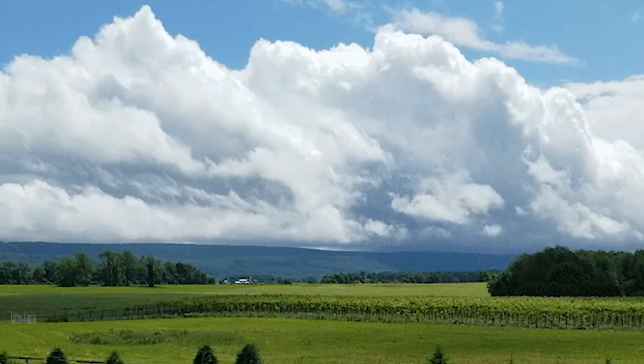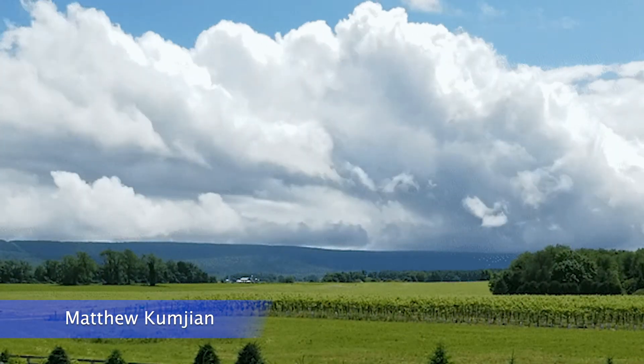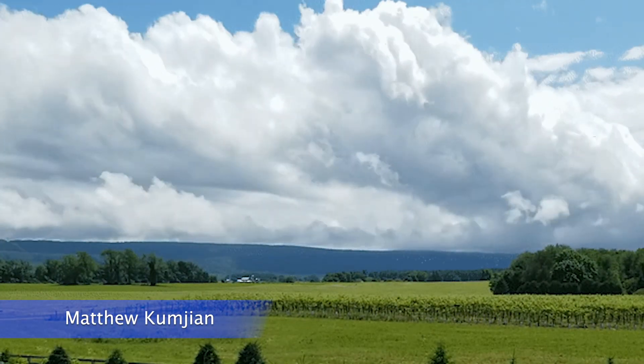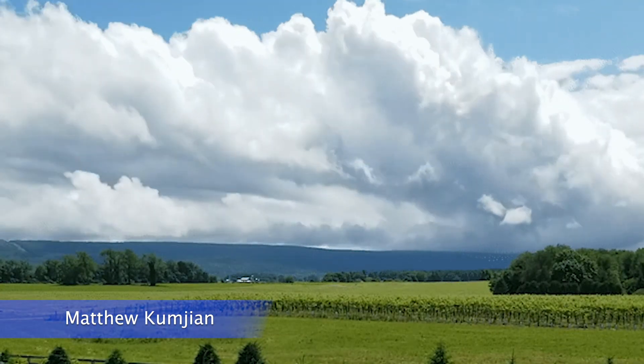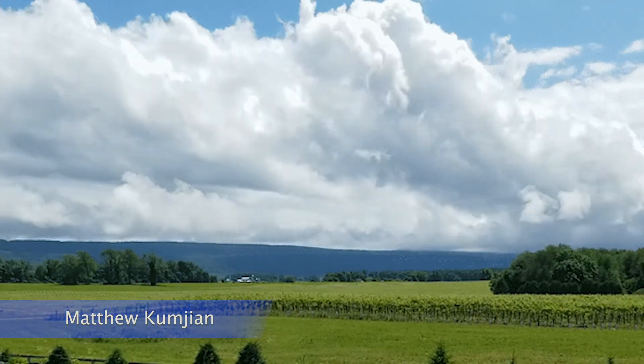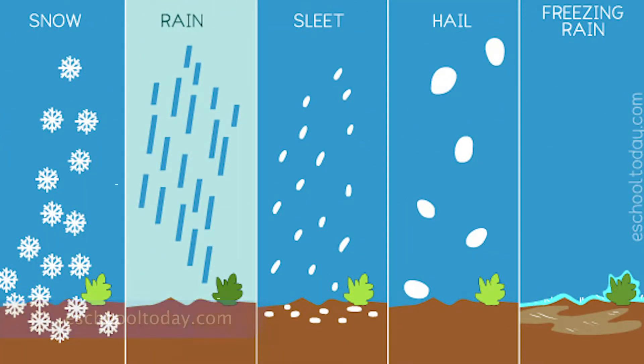What do hail, snow, and rain all have in common? Besides the obvious fact that they're forms of precipitation, they all form from unique processes involving cloud microphysics. The basic definition of cloud microphysics is the involvement of small-scale processes that lead to the formation of clouds and thus precipitation.